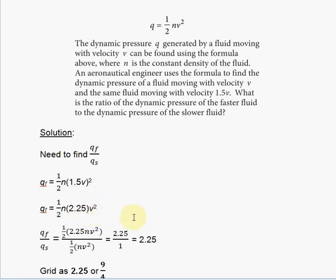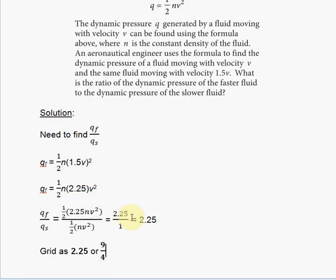Now you're ready to find your desired ratio of the faster moving fluid dynamic pressure to the slower moving fluid dynamic pressure. You're going to substitute in these values. You'll have one-half times n times 2.25 times V squared divided by one-half times n times V squared, because this is the original dynamic pressure Q of the slower moving fluid.